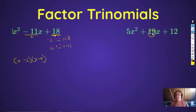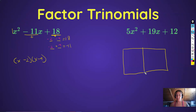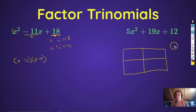It gets a little more complicated when the leading coefficient is greater than 1. What we're going to use here is the box method. You don't have to use box method — there are four or five different ways to do this — but I use it because it's an algorithm where you just follow the steps and you'll always get it right, without a lot of critical thinking involved.